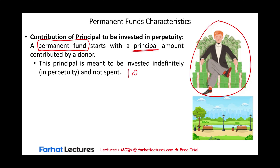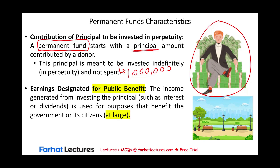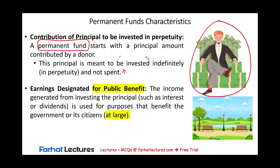Let's assume someone contributed $1,000,000. They want this $1,000,000 put in a permanent fund — meaning you cannot spend this $1,000,000. But if you invest this money at 5% every year, you get $50,000 in interest revenue, and you can spend that. An individual can also contribute stocks, which generate dividend revenue, or bonds, which generate interest. The original principal or investment cannot be spent; only the earnings from that money can be spent.